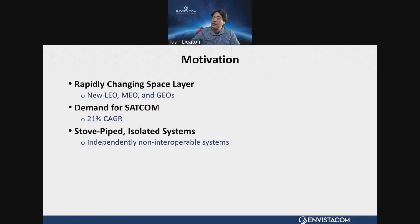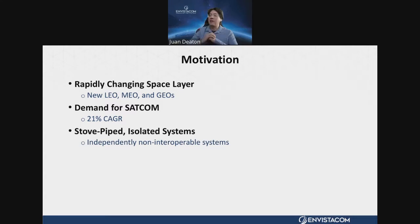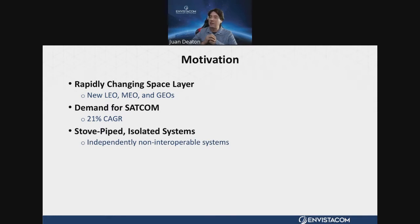What's the motivation behind this presentation and the digital transformation? First, there is a rapidly changing space layer. SpaceX is putting up satellites for the Starlink constellation, Amazon is beginning their Kuiper constellation, Telesat has plans for a constellation, and OneWeb has a LEO constellation now. There's a lot of emphasis on LEO technologies right now. However, that's just part of the story — many new medium earth orbit satellites have been deployed, and there are new plans for launching new GEOs as well.